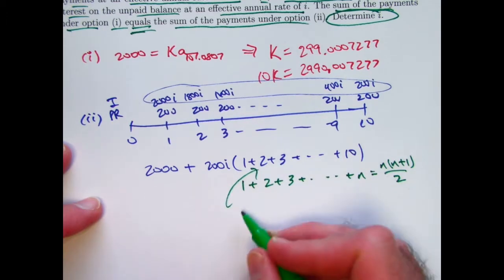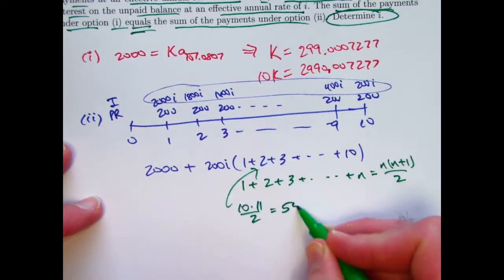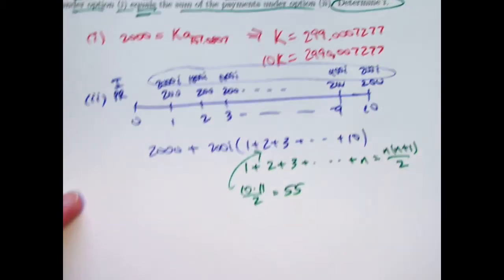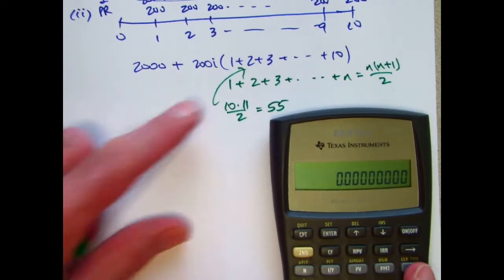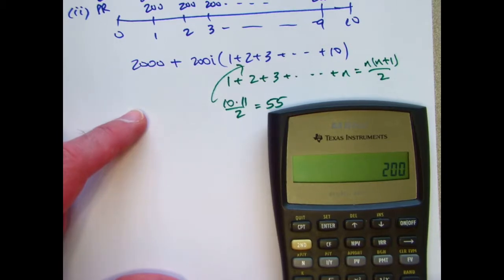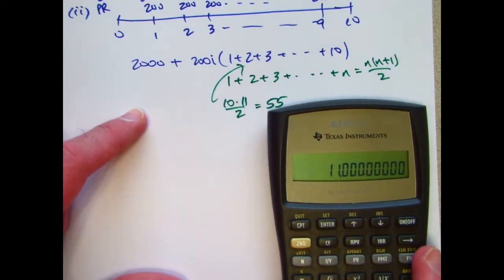So in this situation, n is 10. So I get 10 times 11 over 2, which is 55. 55 times 200 is 11,000.